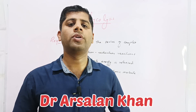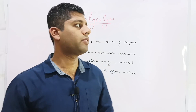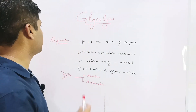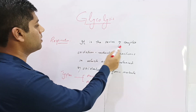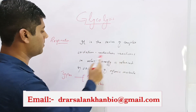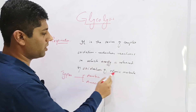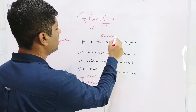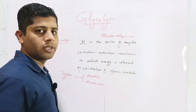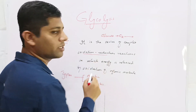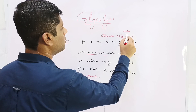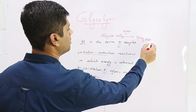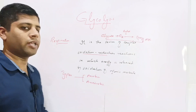Hi, I am Dr. Arsalan Khan and today we are going to discuss the metabolic pathway and mechanism of glycolysis. Prior to discussing glycolysis, we have to explain respiration. It is the series of complex oxidation-reduction reactions in which energy is released by the oxidation of organic molecules. For example, glucose is oxidized through various redox reactions and energy is released in the form of ATPs. This whole process is called respiration.